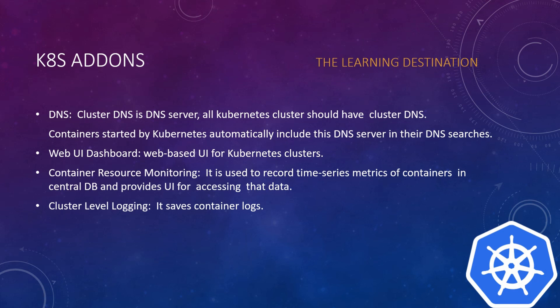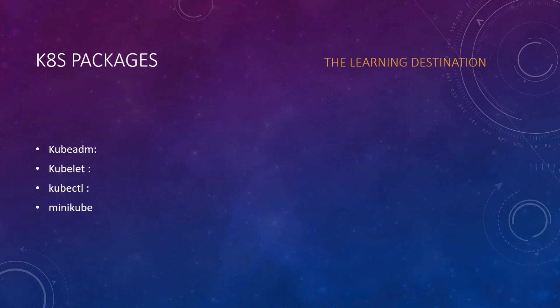If you want to deploy Kubernetes, the following packages should be installed on your machines: kubeadm, kubelet, kubectl (the Kubernetes command-line tool), and optionally minikube. Minikube is optional — if you are going for production, you only need to install kubeadm, kubelet, and kubectl. If you want to deploy a single-node cluster, you can use minikube.